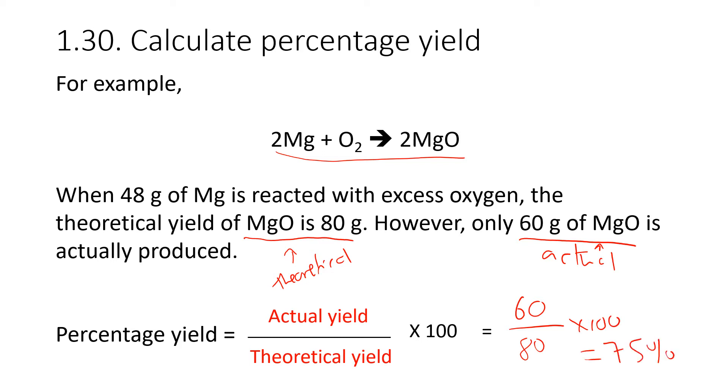One way to think about this is the same kind of calculation that you would do if you're trying to figure out what you scored percentage-wise on a test at school. Your theoretical score would be 100%, which would be you got all the questions right. So say the question was out of 100, then your theoretical yield would be 100. But say you only scored 75 marks, so you actually scored 75 out of a theoretical 100. Therefore, you do 75 over 100 multiplied by 100.